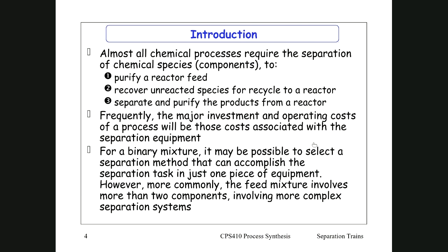Almost all chemical processes require some sort of separation — either to purify the reactor feed, or most likely to recover unreacted species to recycle to the reactor. In the semester test, there was ethanol we needed to recycle. If we didn't recycle it, we would need 3.57 divided by 0.8 — the conversion — if we did not recover the ethanol.